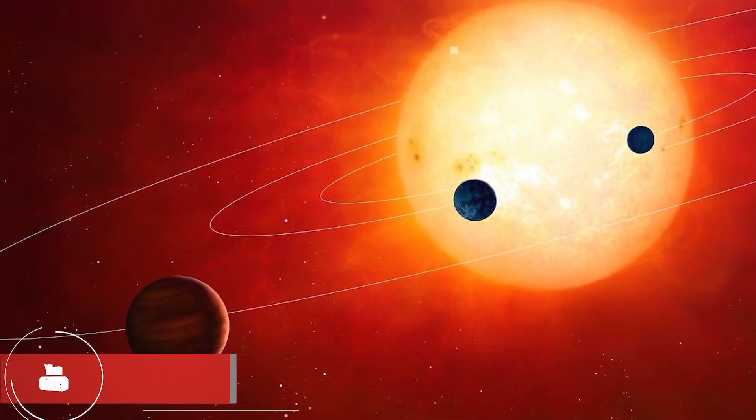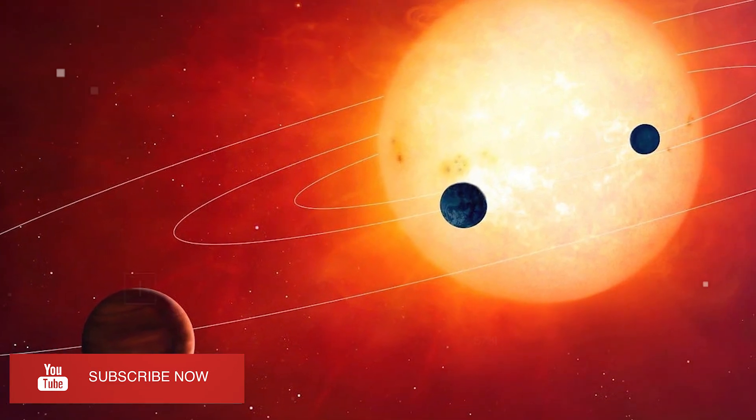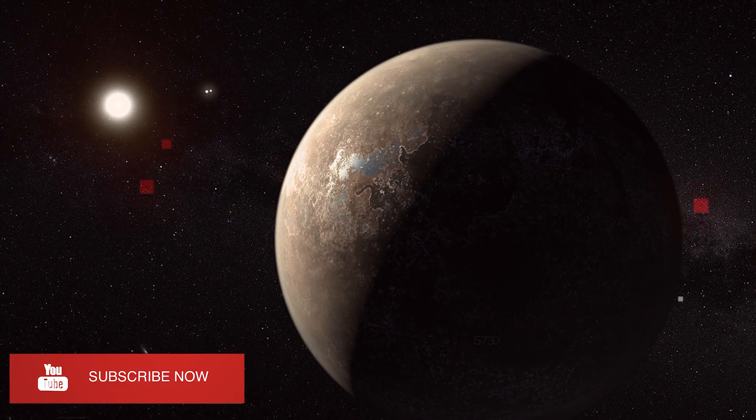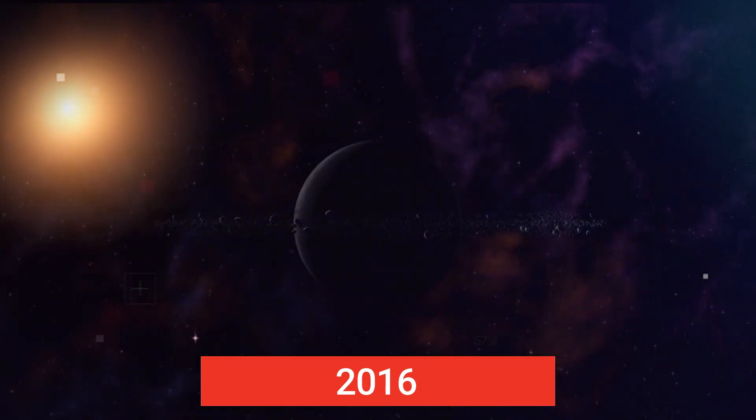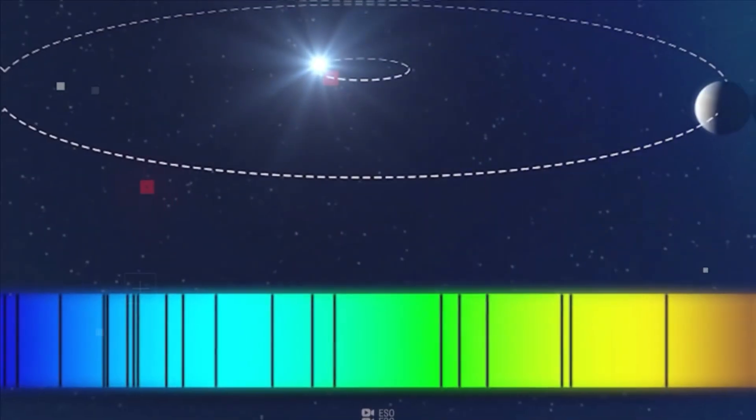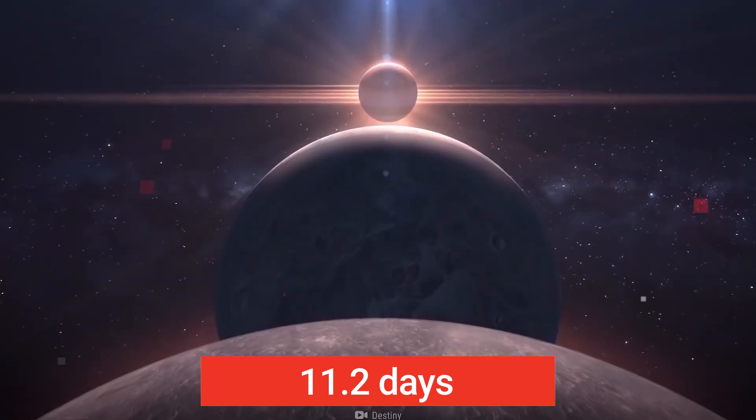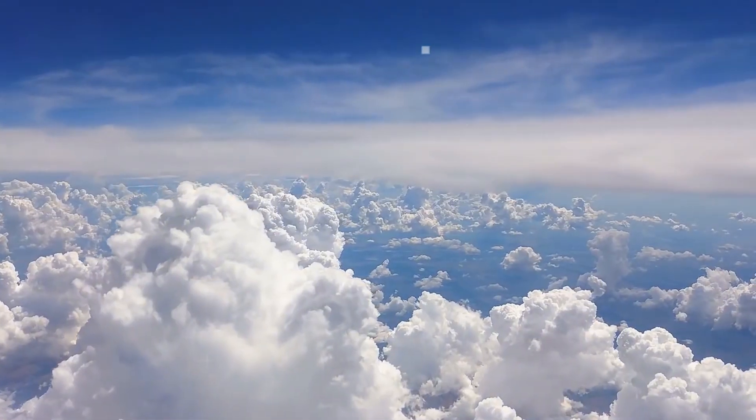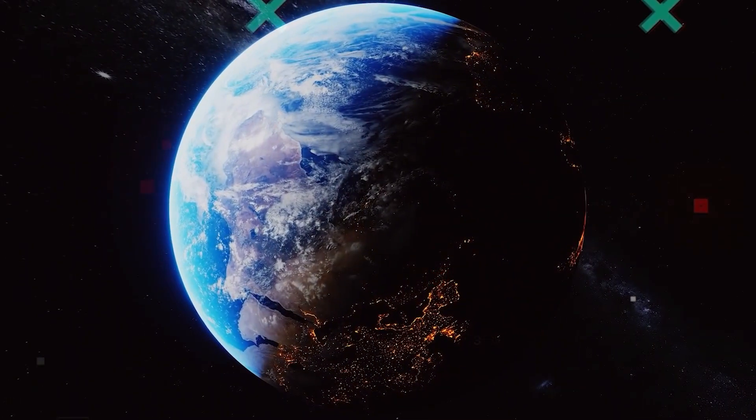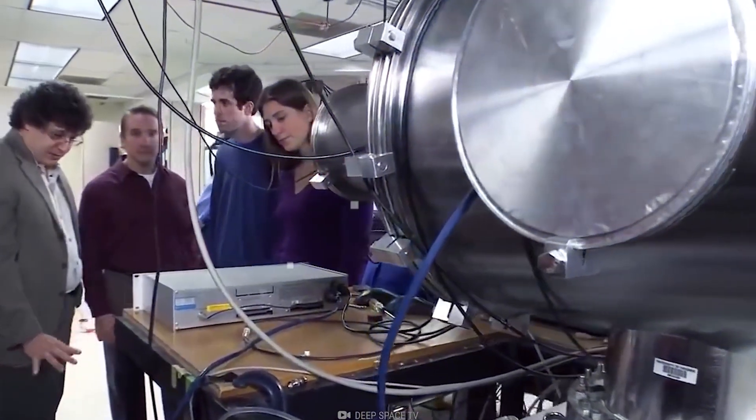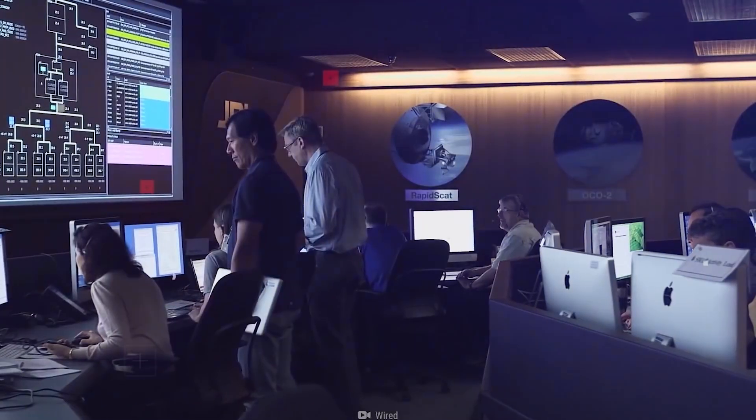Proxima b, nestled in the habitable zone around Proxima Centauri, our Sun's closest stellar neighbor, has captivated scientists since its discovery in 2016. Orbiting its parent star every 11.2 days, this exoplanet holds the promise of potentially Earth-like conditions, making it a prime target for studies of habitability and the search for extraterrestrial life.